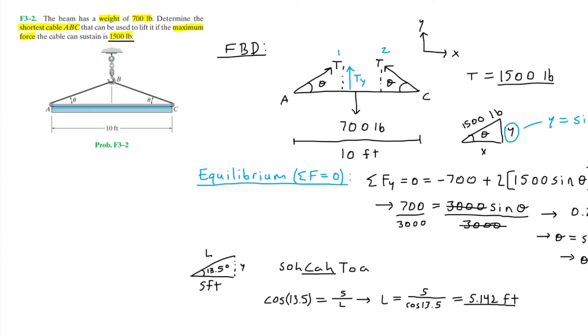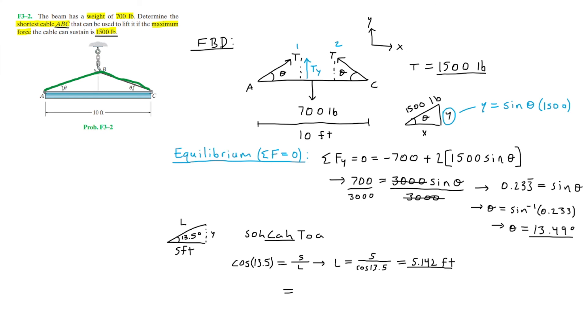However, the problem wants the entire cable ABC, which is this entire length right here. In that case, the length ABC will be equal to twice the length L. That's going to be 2 times 5.142, which ends up being roughly 10.28 feet.